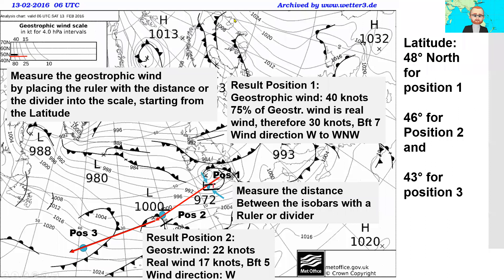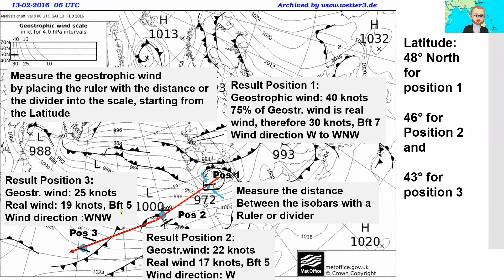The next position is position three. We can see the isobar spacing is also relatively large, though a little closer than position two. I place the measured distance into the scale starting from 43 degrees latitude. The result is 25 knots geostrophic wind, giving a real wind of 19 knots — approximately Beaufort 5 — and the direction is west. This is how we use the geostrophic wind scale to get the real wind.